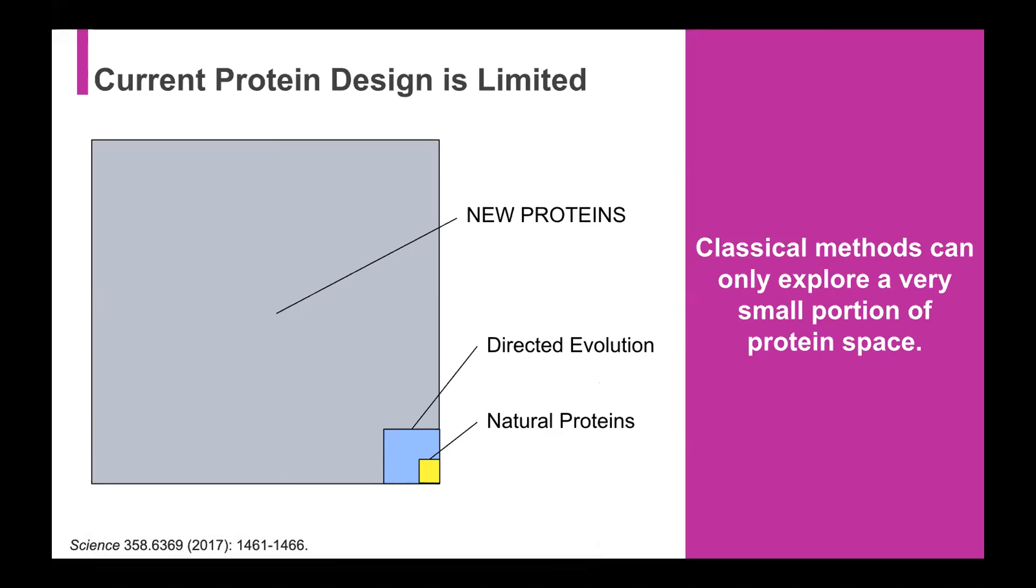And so the way protein discovery or protein design is done today, by the most part involves a process where, if you're lucky enough, you'll go to nature and you'll find a protein that suits your needs. However, most of the time, that is not the case. However, if you again, if you're lucky enough, you can take one of those natural proteins, and you can evolve it during directed evolution. You mutate and do several iterations of that until hopefully you get the protein that you need. And that works quite well.